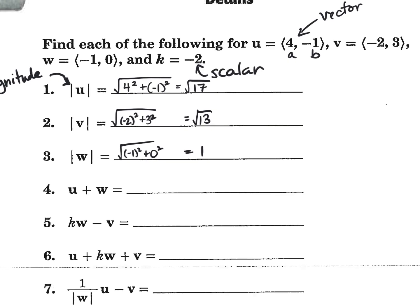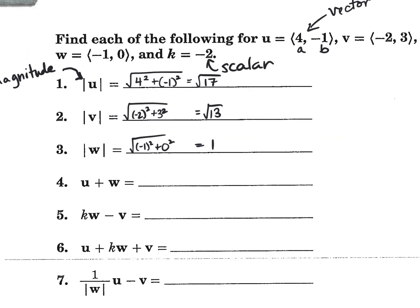All right, so how do we do U plus W? Guys, we did this last time too, didn't we? We added vectors. That's really all we do. We take U, which is (4,-1), and we add W to it. 4 plus negative 1 is what? 3. And negative 1 plus 0 is negative 1. Julie, are you writing or are you watching something on your phone? Be honest. Put your phone away. And take notes so you remember this.